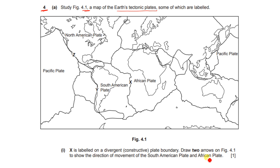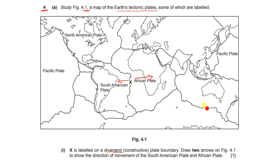They are both on a divergent plate boundary, so they are moving away from each other. It will be one arrow moving this way and another arrow moving this way — moving away from each other. That's all.